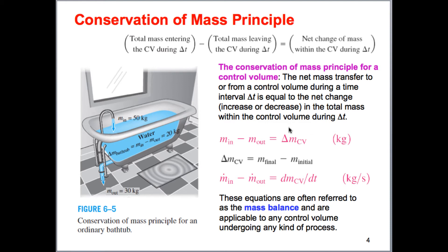Now that we've defined mass flow rate, how do we define the conservation of mass? The conservation of mass is described as: what's coming in — the mass flow rate coming in — the mass flow rate leaving, and whatever accumulates in our system. Here we use a bathtub as an example. That accounts for all the mass coming in, out, or accumulating — for instance, the accumulation of water in the tub if the drain doesn't drain fast enough.